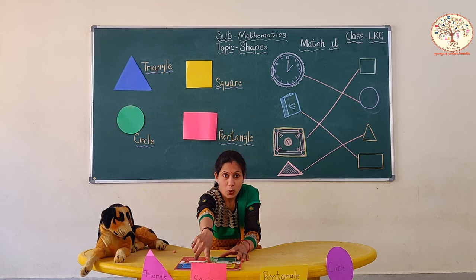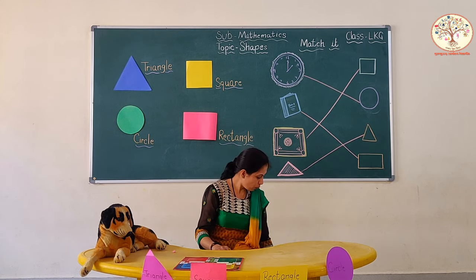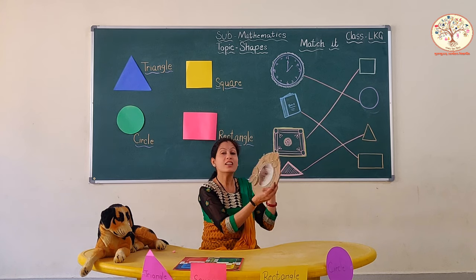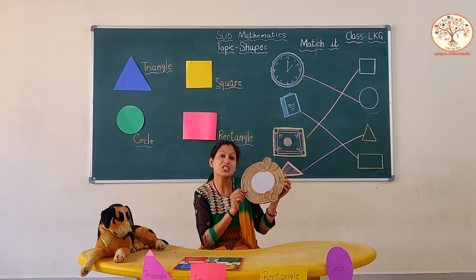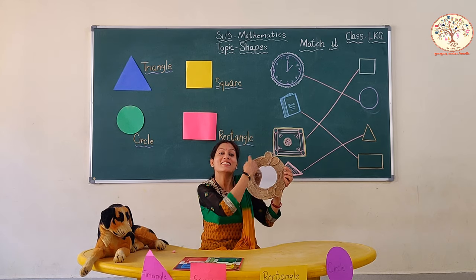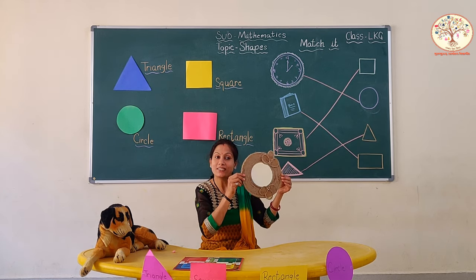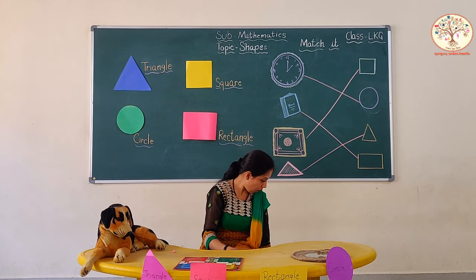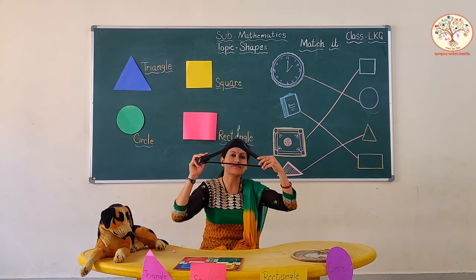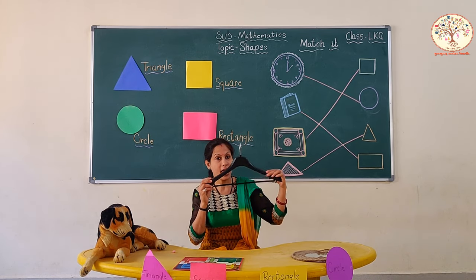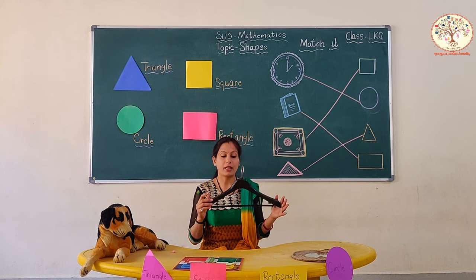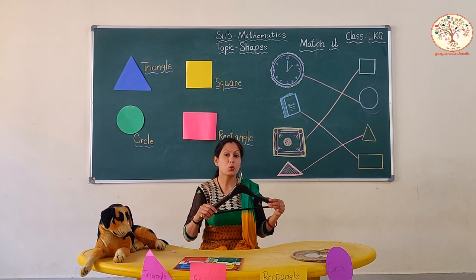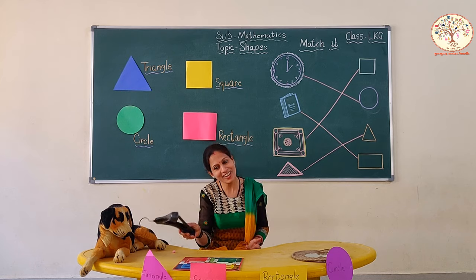Is it square? What is this? This is a hanger, and it looks like a triangle. So, it will go to the house of triangle.